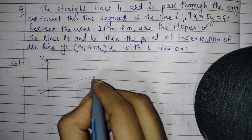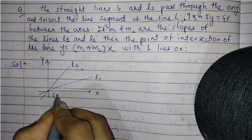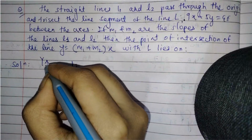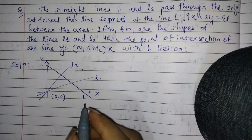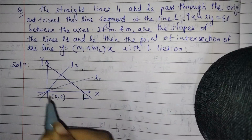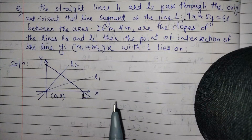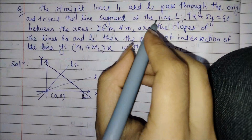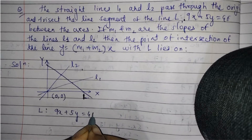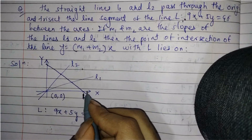Graphically, there are two lines L1 and L2 which pass through the origin (0,0), with slopes M1 and M2 respectively. There is another line L, and L1 and L2 trisect the segment of line L between the axes. These are the four points at which the segment is trisected. The equation of line L is 9x plus 5y equals 45.